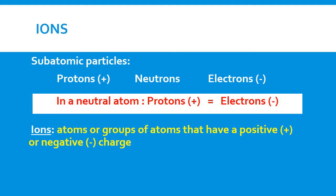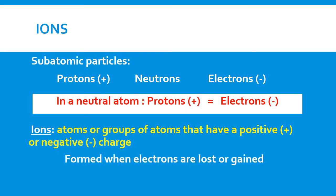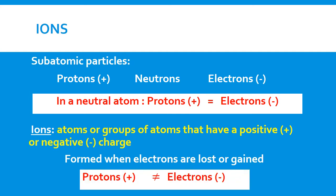An ion consists of an atom or a group of atoms that have a charge, whether that charge is positive or negative. They're formed when electrons are either lost or gained. When atoms lose or gain electrons, we upset the balance of protons and electrons — we no longer have equal amounts. A negative charge means more electrons than protons; a positive charge means more protons than electrons.